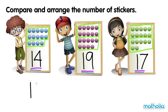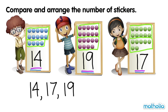From the smallest to the greatest, the numbers are 14, 17, and 19. We can also arrange the numbers from the greatest to the smallest: 19, 17, and 14.